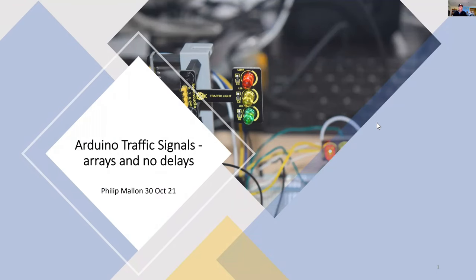Hi, I'm Phil and today I'm going to talk about my traffic signal projects. The first one is using an Arduino UNO computer and the interesting part is that I'm going to use arrays to describe all the parameters of the traffic signal. I'm not going to use any delays but I'm going to schedule a timer for each of the phases of the traffic signal.